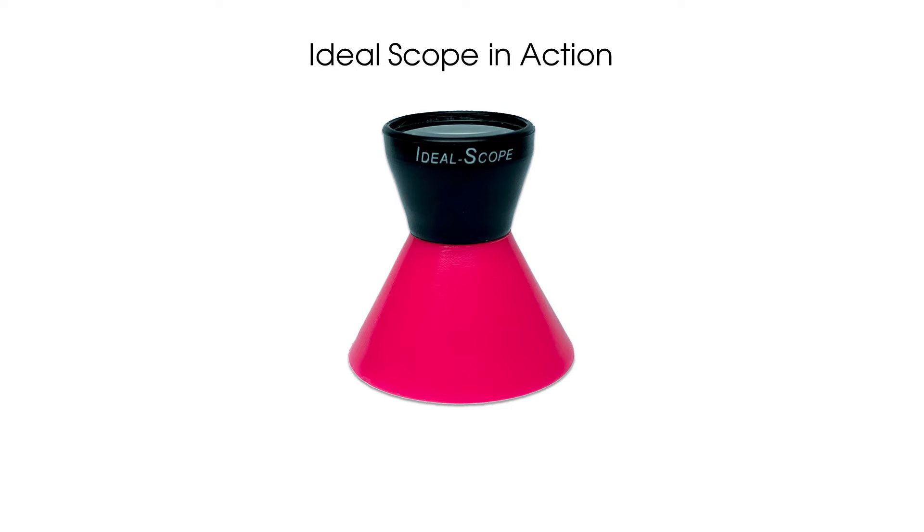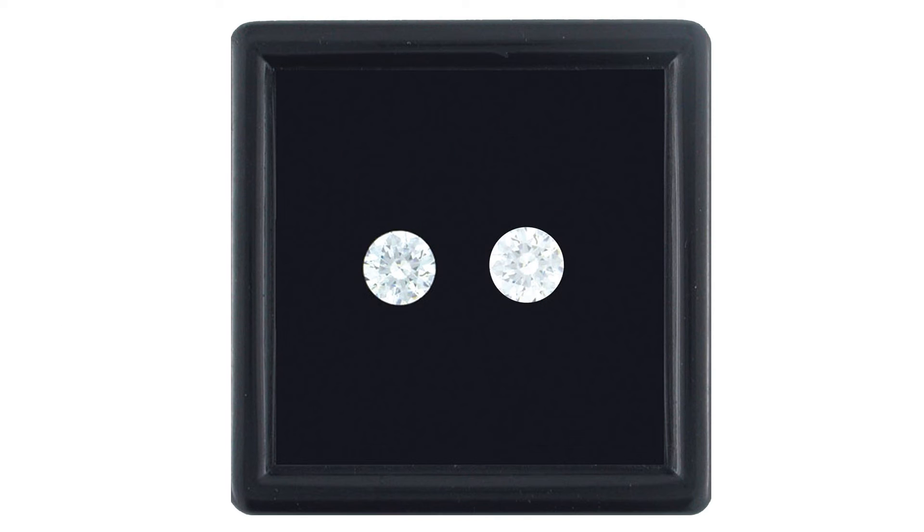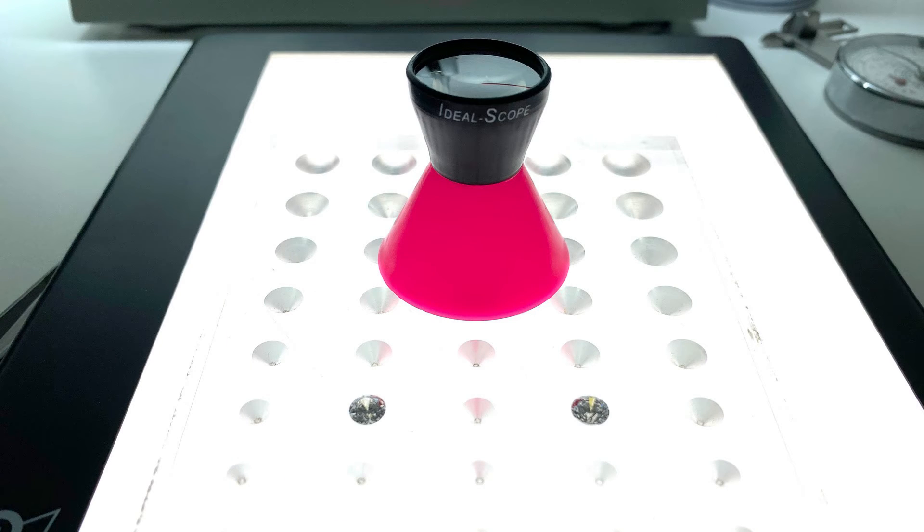Let's see IdealScope in action. Consider these stones. Under jewelry store spotlights, they both appear big and bright. We have an 80 pointer on the left and a 1 carat stone on the right. If both cost the same amount, you may be inclined to buy the 1 carat stone. Before you do, let's see them using IdealScope.